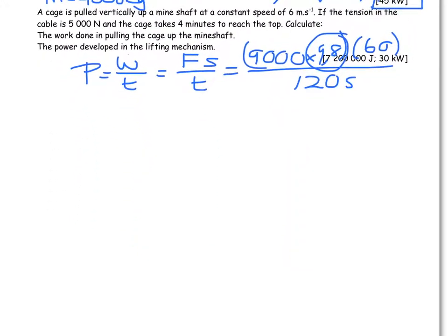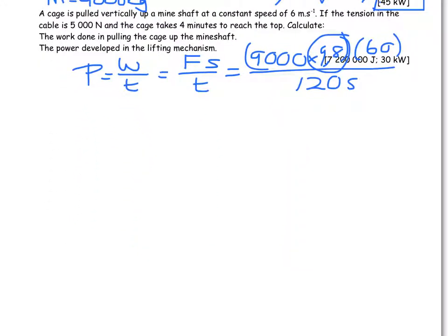We've got a cage that's going vertically up a mine shaft at a constant speed of 6 meters per second. The tension in the cable is 5,000 newtons. It's going at a constant velocity, which means that all the forces are in balance. So there would be 5,000 newtons acting downwards as well. If it takes 4 minutes to reach the top, calculate the work done.